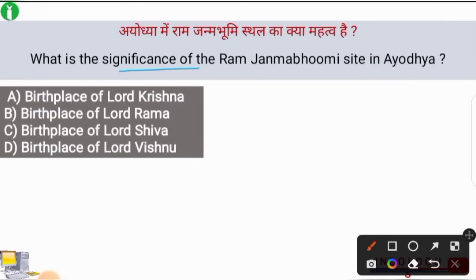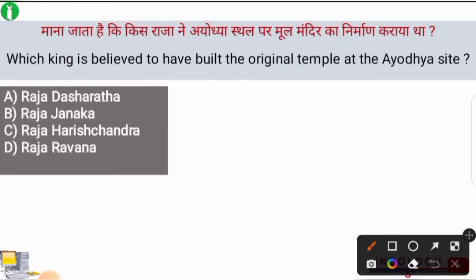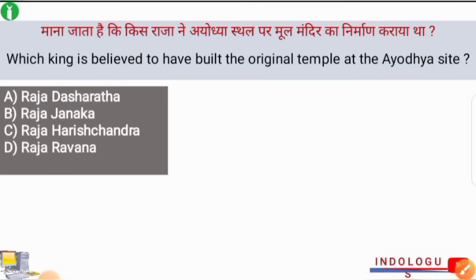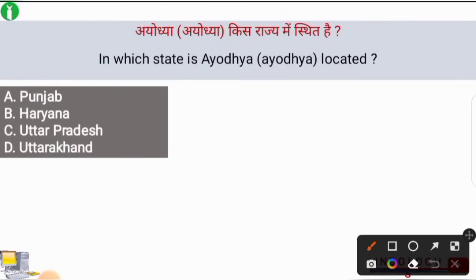What is the significance of the Ram Janmabhoomi site in Ayodhya? The correct answer is option number B — it is the birthplace of Lord Rama. Next question: which king is believed to have built the original temple at the Ayodhya site? The correct answer is option number A, i.e. Raja Dashrath. It was always believed that the first Ram Temple was built by the father of Lord Rama, Raja Dashrath.